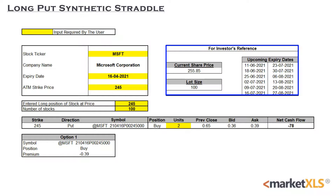For the purpose of this video, we'll be using Microsoft with an expiry date of 16 April. We'll be buying two lots of ATM put option at a 245 strike price and going long on 100 shares at the same price.